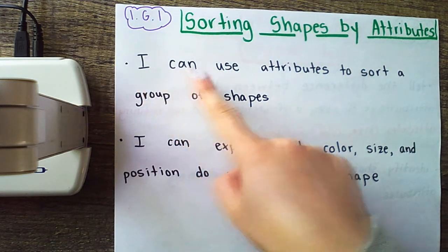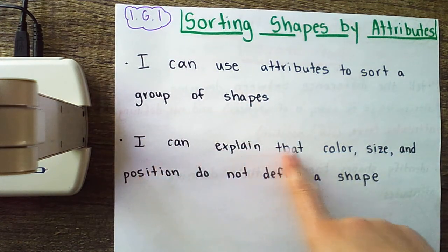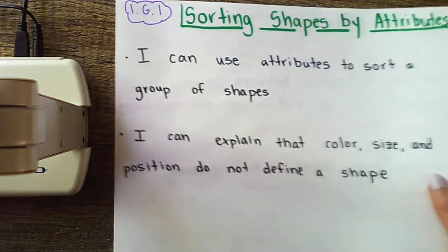Here are our I can statements. I can use attributes to sort a group of shapes and I can explain that color, size, and position do not define a shape. Those are non-defining attributes.